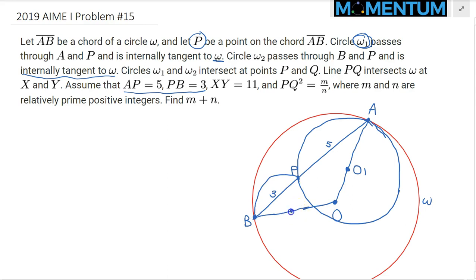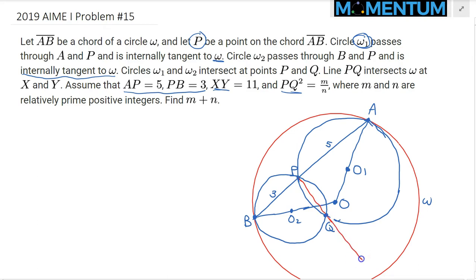The center O2 will be somewhere on the perpendicular bisector — maybe here. This is the point Q, the second point of intersection. We are told that PQ is the radical axis. We extend it to meet the circle at X and Y. So this point is X and this one is Y. Given that XY is 11, we want to find PQ squared.